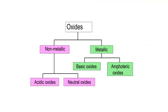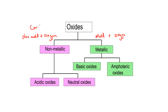Oxides are basically divided into two main categories. First, there can be a non-metallic oxide — a non-metal present with oxygen. And there can be a metallic oxide — a metal present with oxygen. Since oxygen is a non-metal, when two non-metals are present they will have covalent bonding, and when a metal reacts with a non-metal like oxygen they will have ionic bonding.